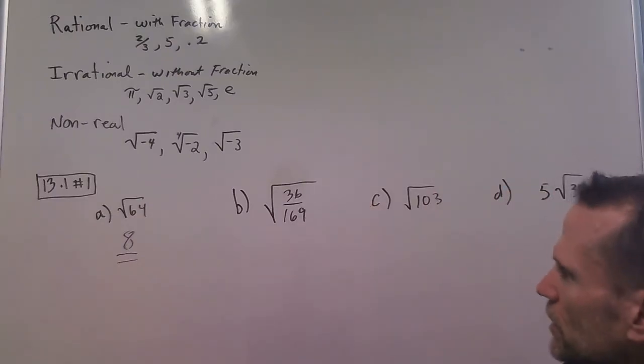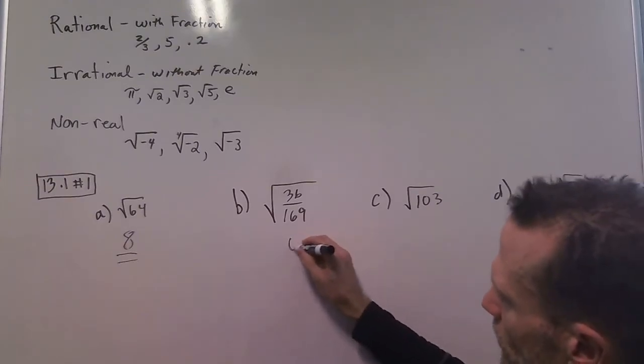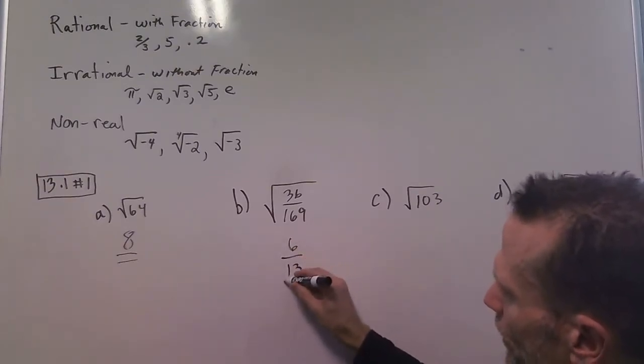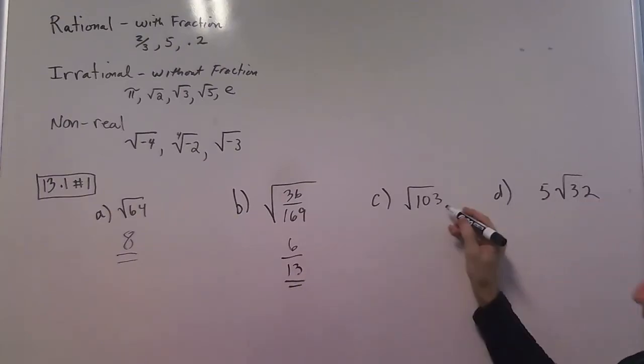When we do a problem like this, we can do the square root of the numerator and the square root of the denominator, so we get 6 over 13.